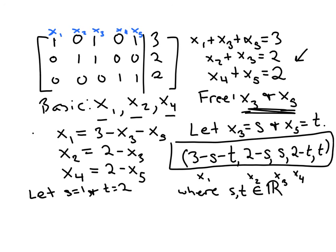then that would generate a solution. You can plug in specific values for s and t and generate solutions to the three equations. So that would give us, let's see, 3 minus 1 minus 2, that would give us 0 in the first entry.